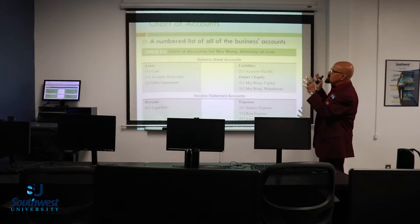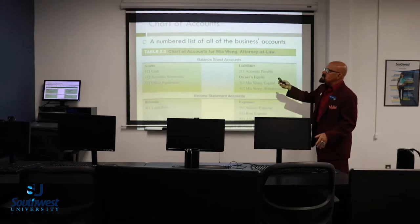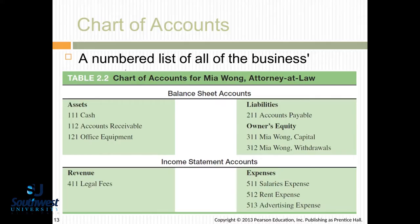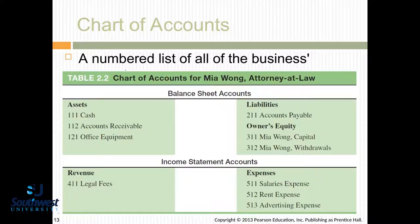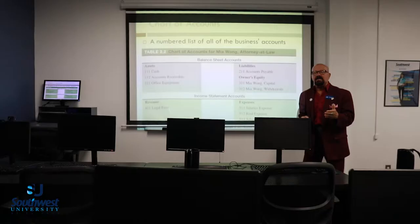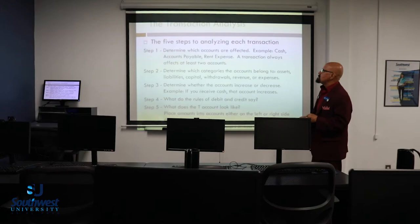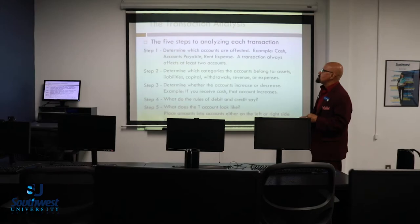This is your standard chart of accounts. Assets are usually in the hundreds. Liabilities are in the 200s, owner's equity in the 300s, revenue in the 400s, expenses in the 500s. That's just how the IRS wants it, so that's what we're going to do. A lot of what we do is because governmental agencies tell us how they want it, so we make sure we're in compliance.